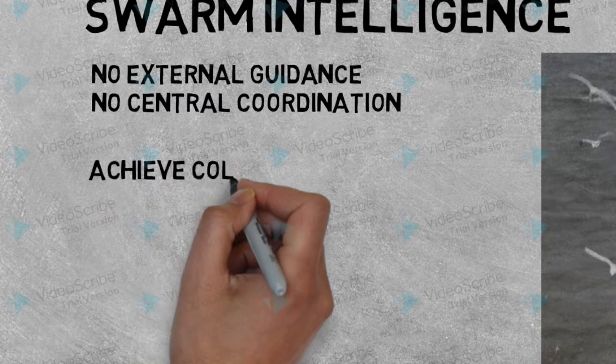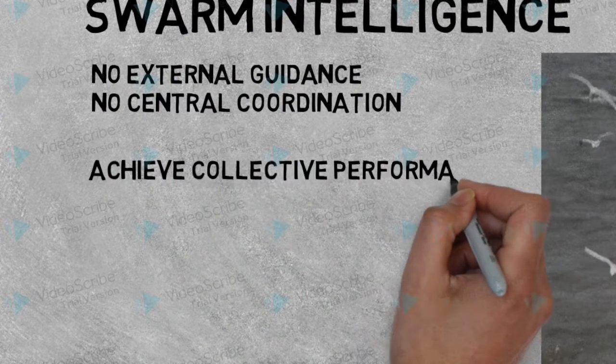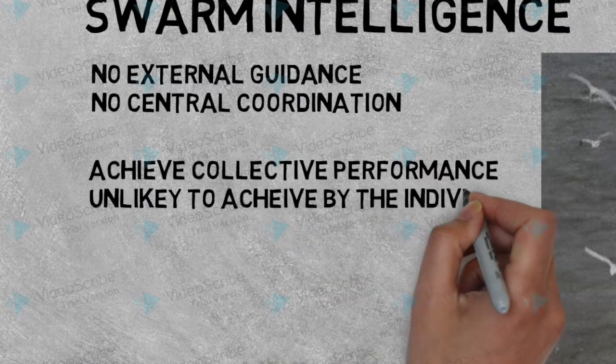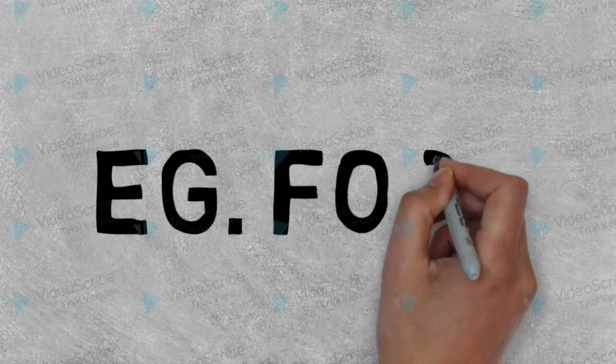Another key point of swarm intelligence is that they can achieve a collective performance which is fairly unlikely to be achieved by an individual acting alone. For example, ants finding food in this big wide world.